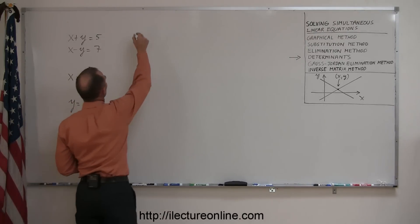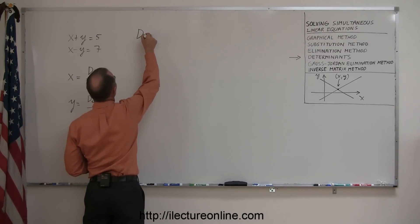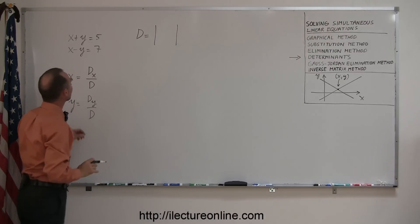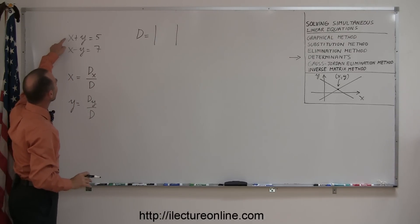First we're going to find what we call the determinant. The determinant can be written with two lines, and within the two lines we write the elements of the determinant, which means the coefficients of the two variables.